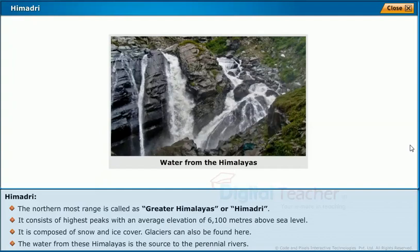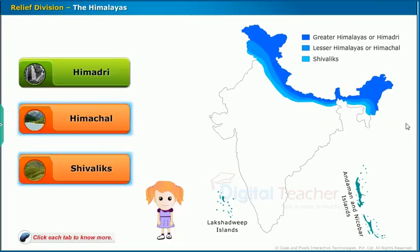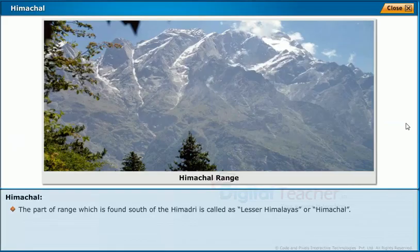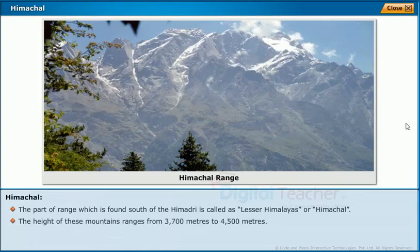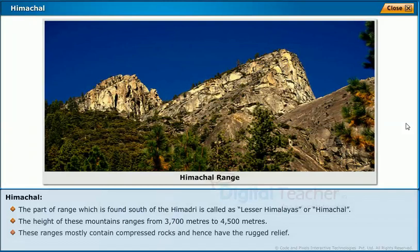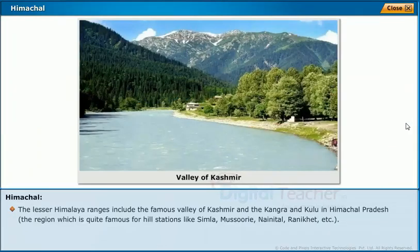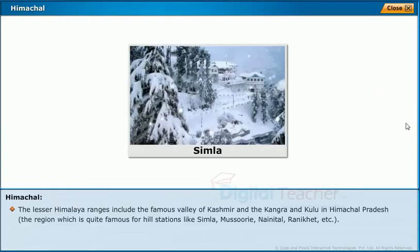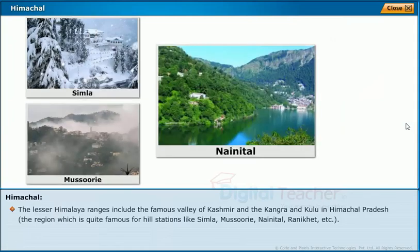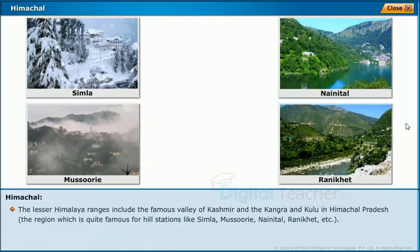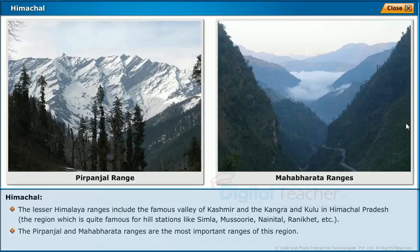Himachal: The part of the range found south of the Himadri is called the Lesser Himalayas or Himachal. The height of these mountains ranges from 3,700 m to 4,500 m. These ranges mostly contain compressed rocks and hence have rugged relief. The Lesser Himalayas include the famous valley of Kashmir and the Kangra and Kulu valleys in Himachal Pradesh. The region is quite famous for hill stations like Simla, Mussoorie, Nainital, and Ranikhet. The Pirpanjal and Mahabharata ranges are the most important ranges of this region.